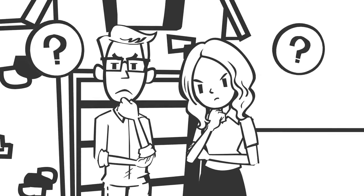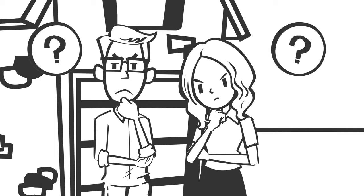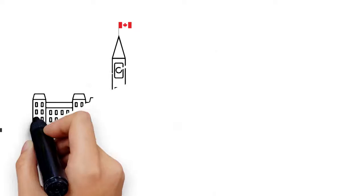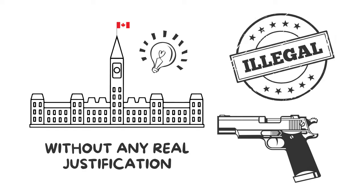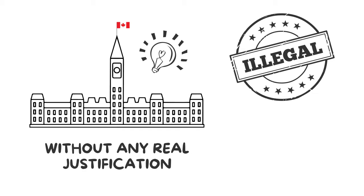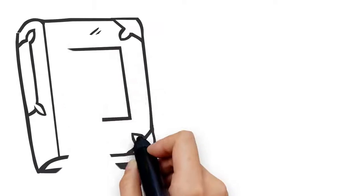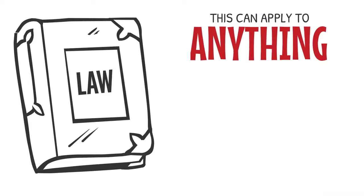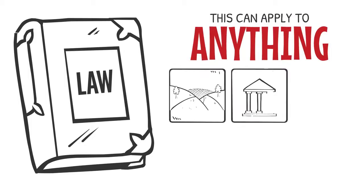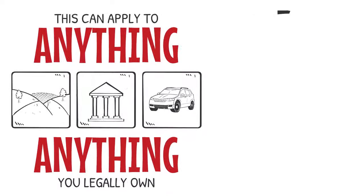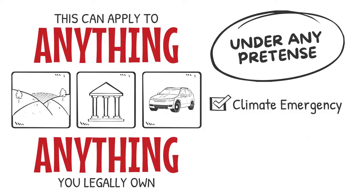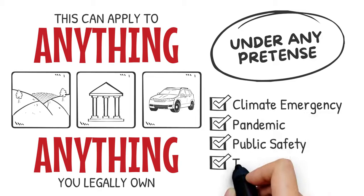But what does this mean for people who don't own guns? It means that currently, the government can decide without any real justification that something you own should be illegal and will be confiscated. The way the law is today, this can apply to anything. Your land, your bank account, your car, anything you legally own and under any pretense: climate, emergency, pandemic, public safety, the economy, literally anything.